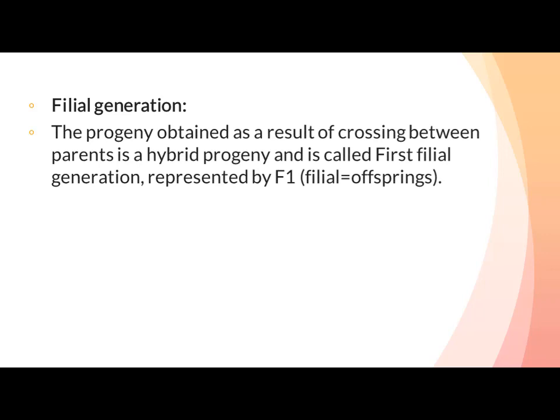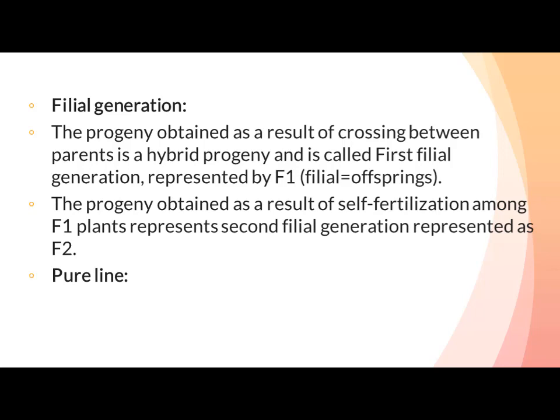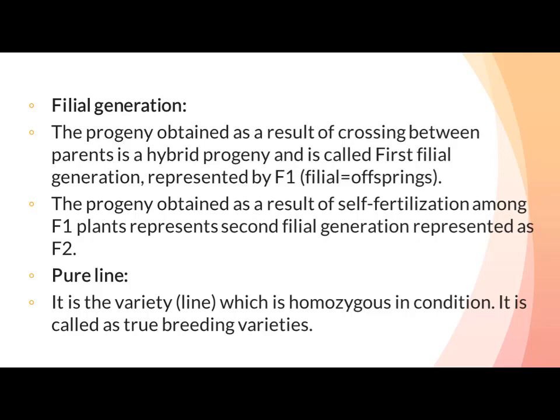Filial Generation: The progeny obtained as a result of crossing between parents is called the first filial generation, represented by F1. Parents کے بعد جو first hybrid generation آتی ہے اسے F1 یعنی first filial generation کہتے ہیں — اور F1 کے cross سے آنے والی generation کو second filial generation (F2) کہتے ہیں۔ Pure Line: A variety which is homozygous in condition is called pure line or true breeding — ان میں similar genes آتے ہیں۔